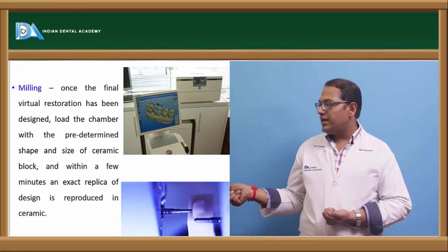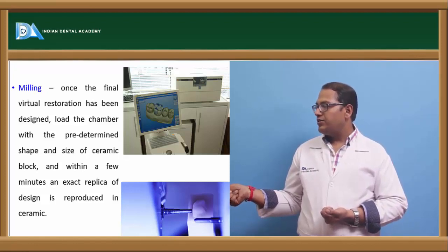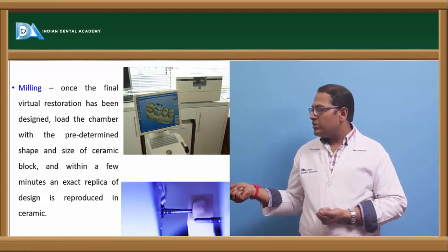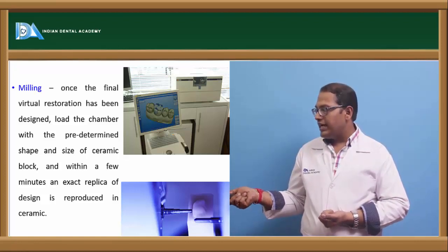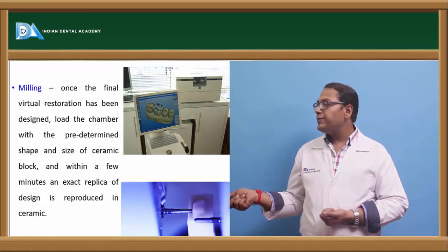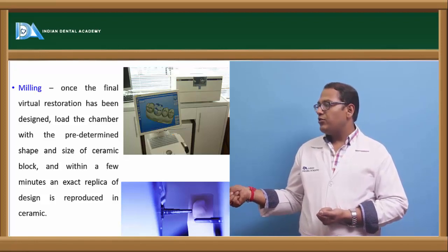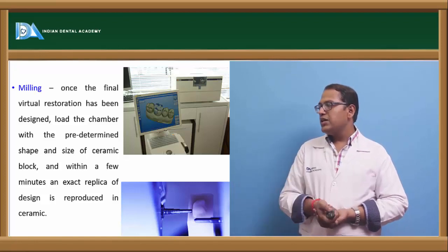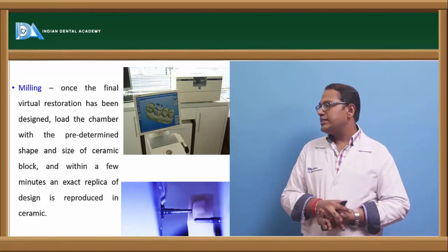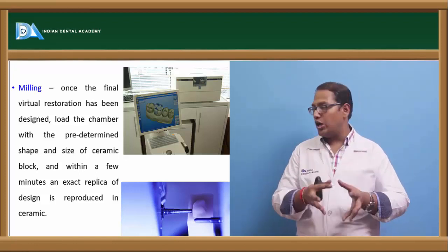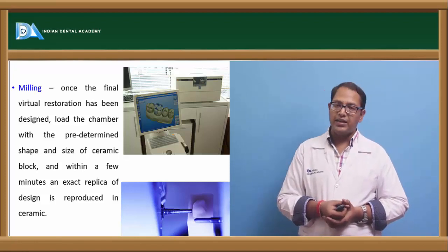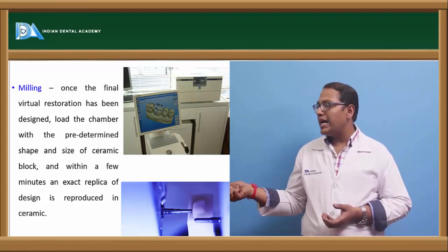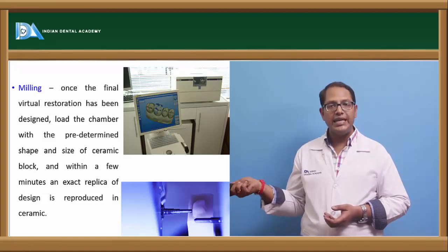After optical scanning is done, you can see in the computer screen how the occlusal surface has come up. Now the wax pattern is made virtually: estimating the height of the preparation, finding any high points, and determining the movements of the maxillary over the mandibular. The functionally generated path can be fabricated virtually. Then comes the milling procedure — once the final virtual restoration is done, the chamber is loaded with a predetermined shape and size of ceramic ingots, and within a few minutes an exact replica of the design is reproduced in ceramic. This is CAD — computer-aided designing — and CAM — computer-aided manufacturing of a crown.